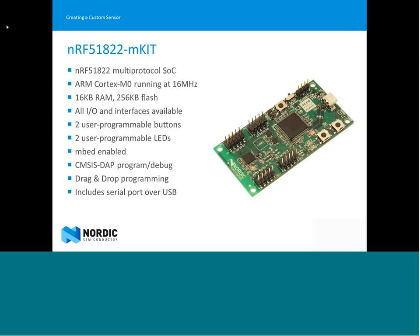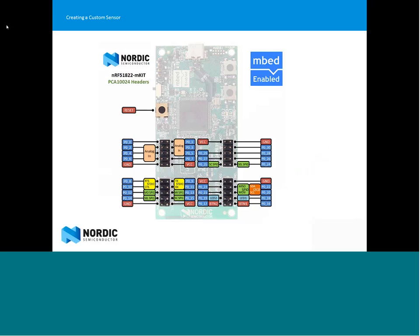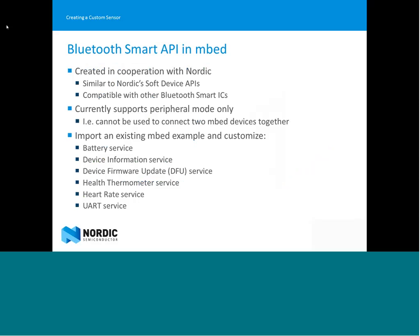Nordic will be bringing NRF51822 mKit eval boards. The NRF51 system-on-chip combines a Cortex-M0, a flexible 2.4 GHz radio, and plenty of flash and RAM. The eval board has dozens of GPIO pins, a couple of LEDs and buttons, and supports embed's IDE and drag-and-drop programming. Support for Bluetooth Smart in embed was created in cooperation with Nordic, so many API calls are similar to Nordic's native BLE stack, though the embed API currently only supports using the device as a peripheral — you won't be able to link two embed devices together over BLE at the hackathon.